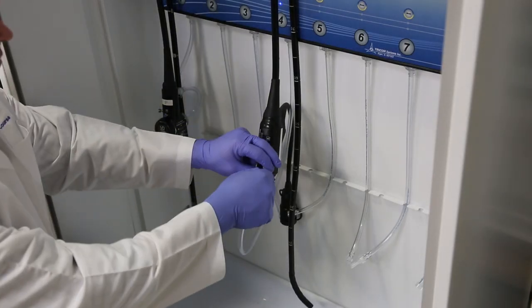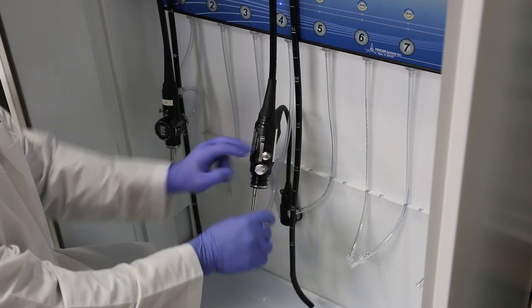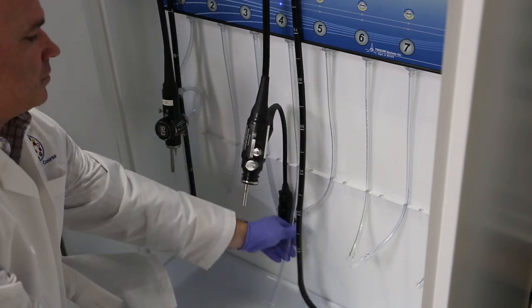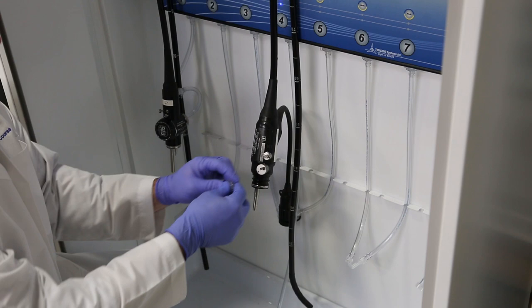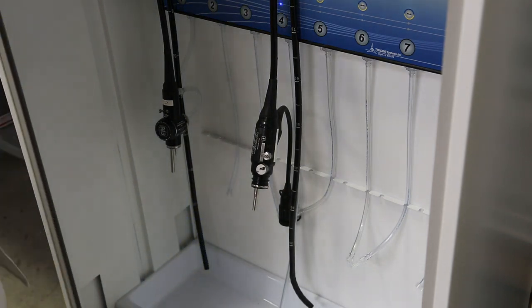When you are ready to use the endoscope for another procedure, disconnect the tubing from the irrigating port. Secure the tubing in the tubing guide and remove the single-use connector from the endoscope.